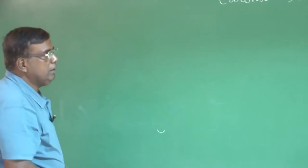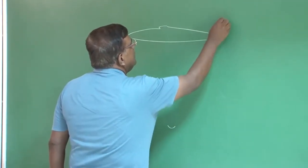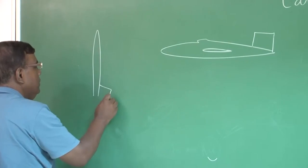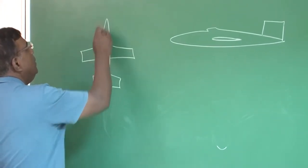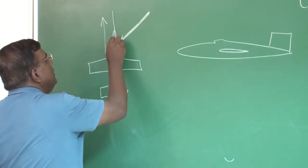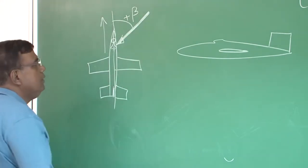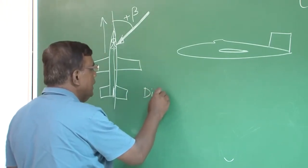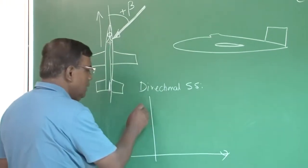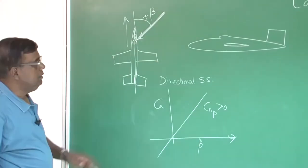So we come back to the lateral-directional case. Before we start going into dynamic stability, we will revise a few things. How do we define beta? In the top view, if I am flying in this direction and the relative wind is coming from my right, that is positive beta. The condition for directional static stability was: if I plot Cn versus beta, then Cn_beta should be greater than zero.